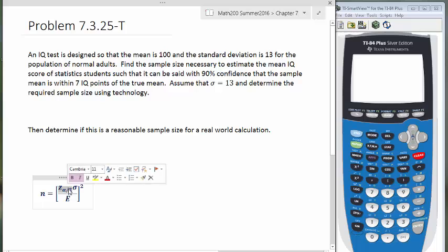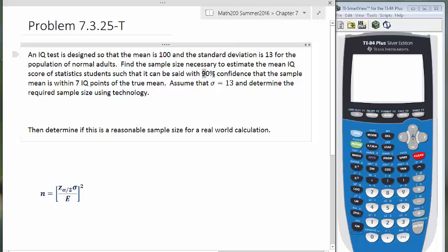First, let's try to figure out what Z sub alpha over 2 is going to equal. Z sub alpha over 2 is going to be a critical value that's based on the confidence level that we have, in this case a 90% confidence level.